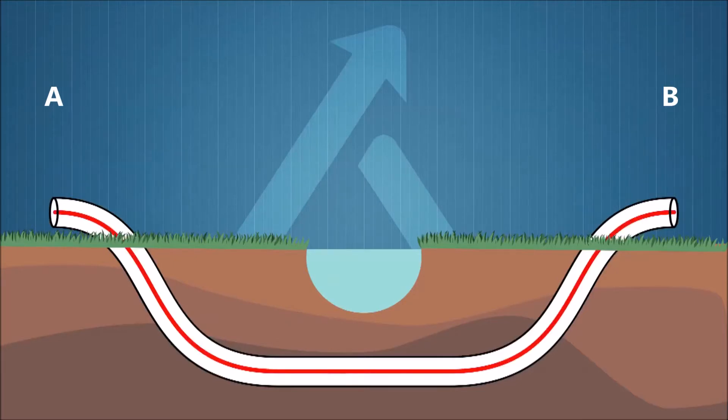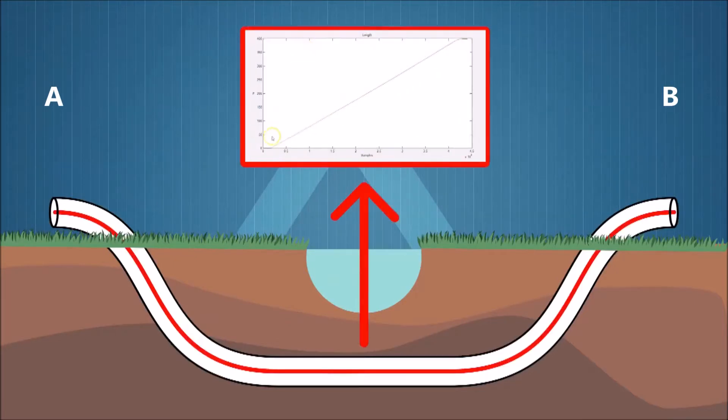The probe measures the shape of the pipe. In order to reference this shape to a coordinate system, X, Y, Z coordinates at entry point A and exit point B are required.